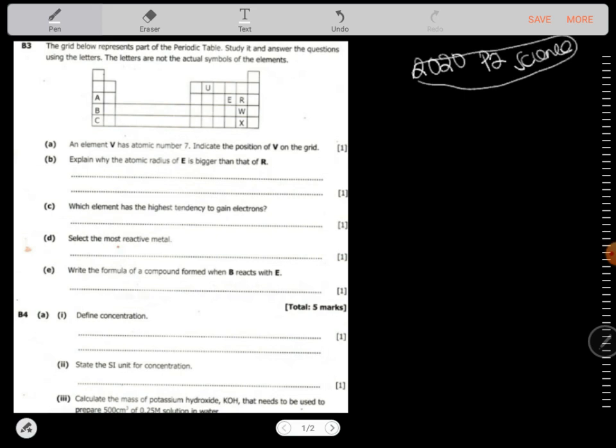This is what we look at. So we have a question that says the grid below represents part of the periodic table. Study it and answer the questions using the letters only. The letters are not the actual symbols of elements. So we have A, B, C, U, E, R, W, and X.